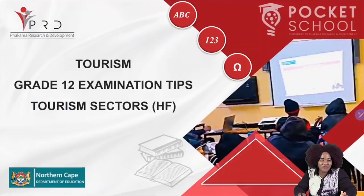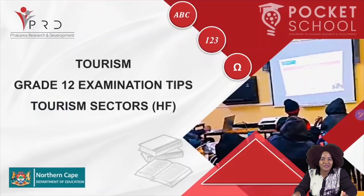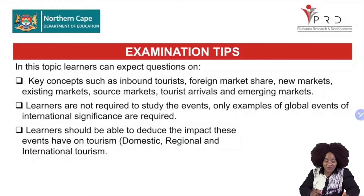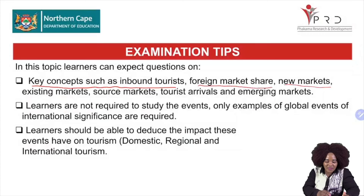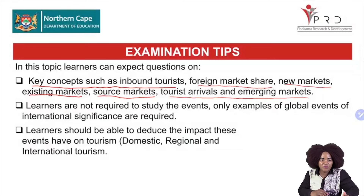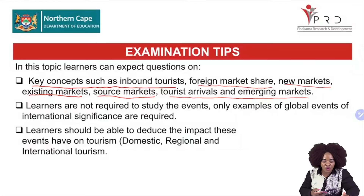Coming to the examination tips, Grade 12 learners, these are things you are cautioned about before writing any topic or section in your exam. In this topic, you can expect questions on the key concepts such as inbound tourism, foreign market share, new markets, existing markets, source markets, tourist arrivals, and emerging markets. Don't be surprised when you see those concepts — you may be expected to apply or explain their meanings. Also, you are not required to study the events in detail, but you are expected to know the examples of these international events of international significance.